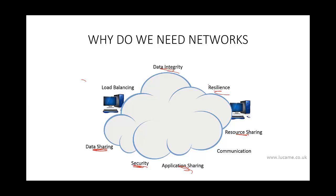Resilience: in a network environment it's possible to provide multiple paths to multiple servers. One aim of network design should be to avoid single points of failure — we'll cover this later in the course. This allows an organization to continue functioning effectively in the event of a breakdown of individual components. Load balancing: those multiple paths also share the traffic load. In a very busy environment you'll have multiple computers serving the same application or service, sharing the demand from clients.